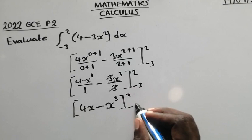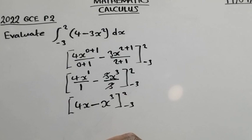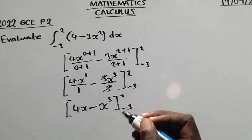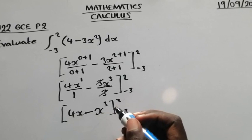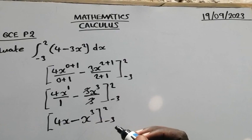So at this stage we are done with the integration. Now it is just a matter of finding the upper limit and the lower limit. To find the upper limit you replace x with 2. Then to find the lower limit you replace x with negative 3.